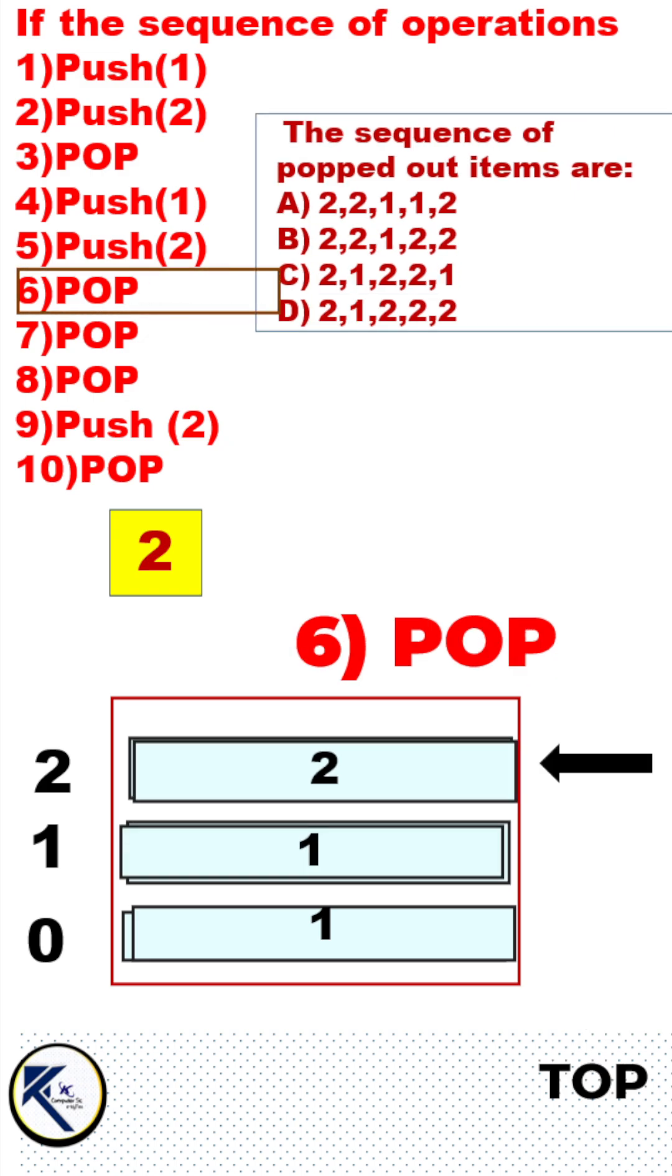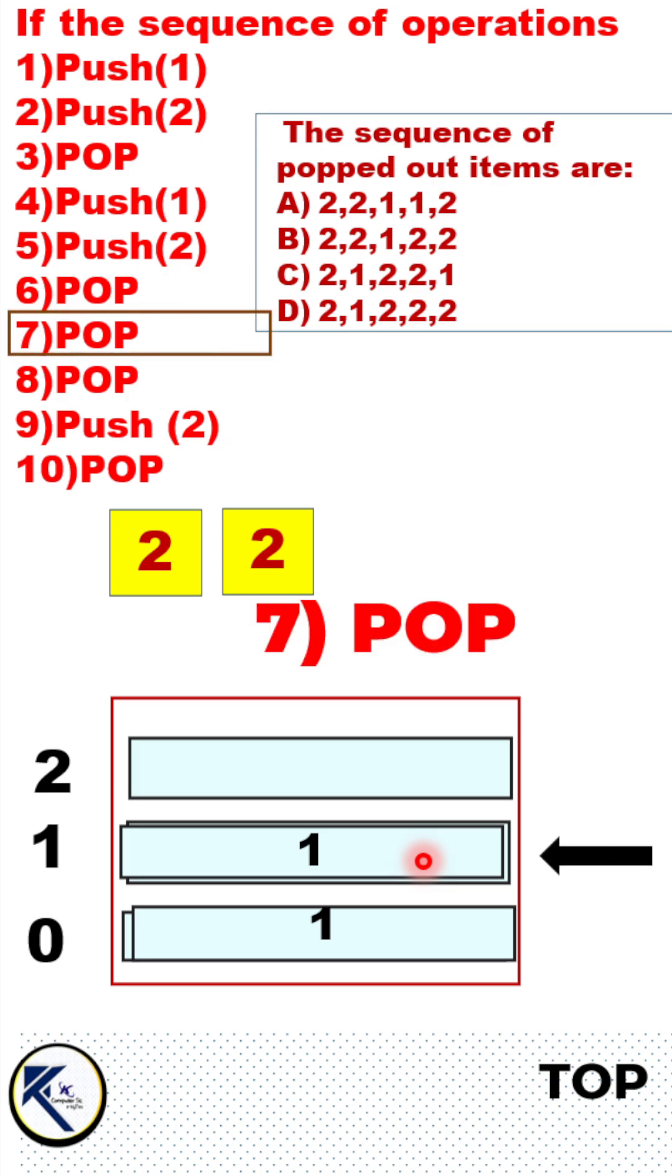But luckily our next operation is pop. So this is the topmost item, it will be removed from the stack. Seventh operation is also pop. So remove this item and push down the top pointer.